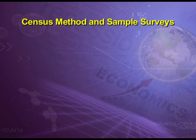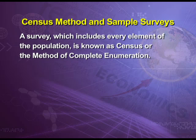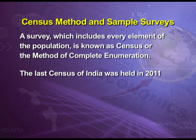Now we are going to talk about main methods of conducting a survey. We have two main methods: census method and sample survey. A survey which includes every element of the population is known as census or method of complete enumeration. For example, if certain agencies are interested in studying the total population in India, they have to obtain information from all households in rural and urban areas — their demographic data on birth rate, death rate, literacy, workforce, life expectancy, size, and composition of population. Such information is collected and published by the Registrar General of India; the last census of India was held in 2011.